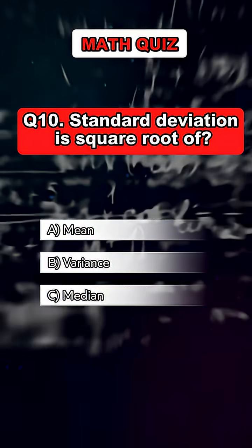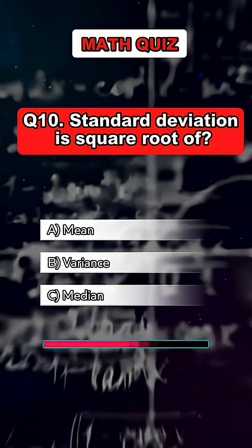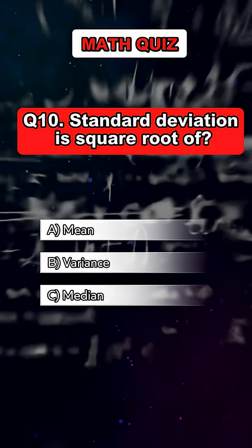Question 10. Standard deviation is square root of. Answer: B, Variance.